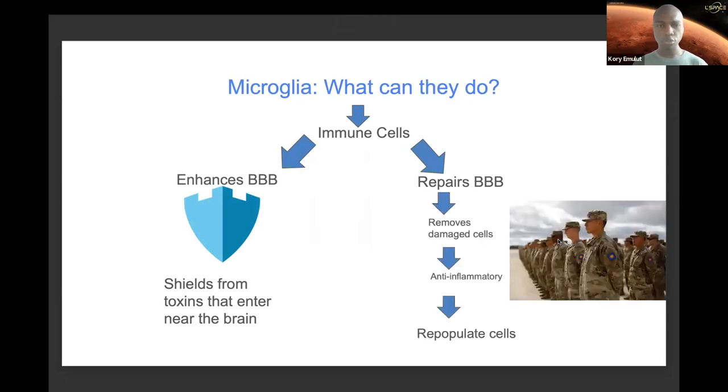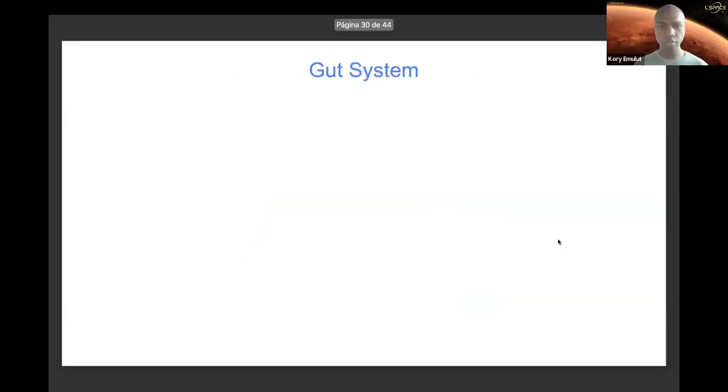Sometimes the microglia are going to be damaged during this fight and taken out of play. Those on standby will swap from inflammatory to anti-inflammatory and take on the fight. While this is happening, the blood-brain barrier is going to repopulate and create more cells, in a way repairing itself.